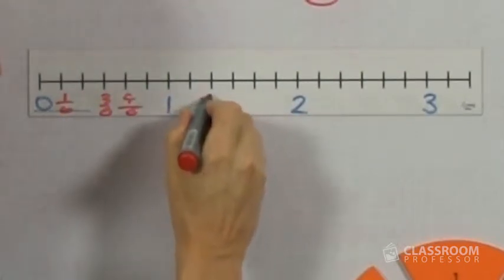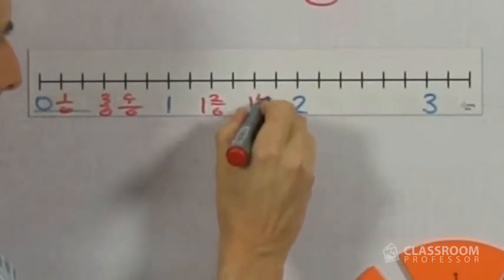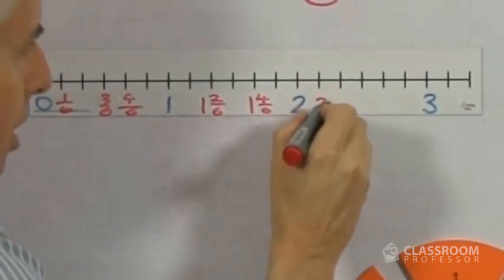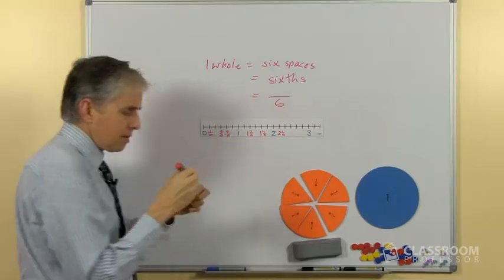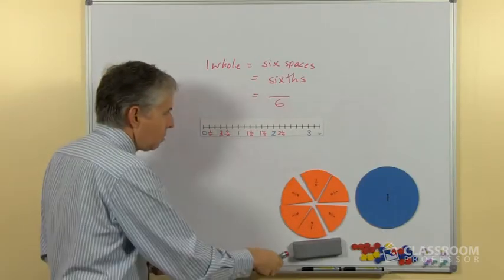And up here we might have 1 and 2 sixths, that's a bit neater, 1 and 4 sixths, 2 and 1 sixth. As I said, there's not a lot of space here to fill them all in.